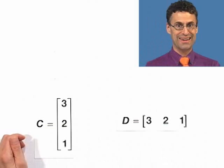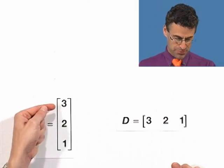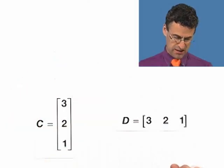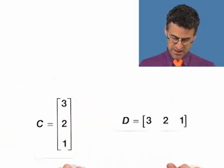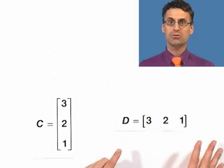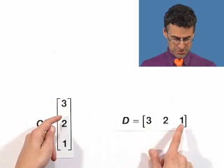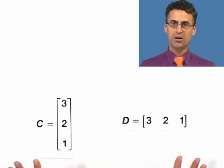But are they? You see, they don't have the same dimensions. This has three rows and one column. It's a 3 by 1. This has one row and three columns. It's a 1 by 3. So in fact, these two can definitely not be the same.